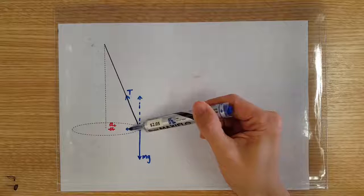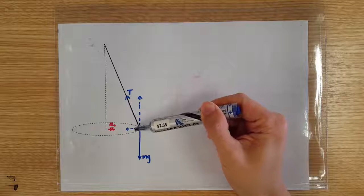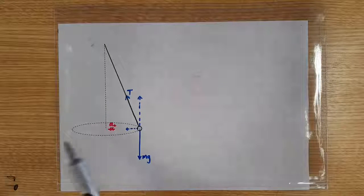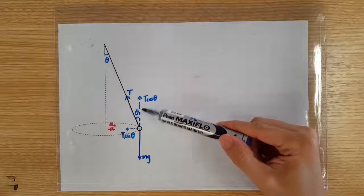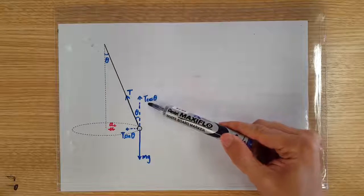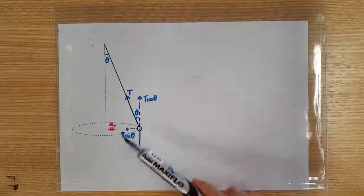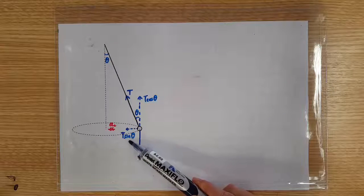In fact, it's the horizontal component of tension that provides the required centripetal force for this circular motion. If we call this angle θ, then the vertical component of tension will be T cos θ and the horizontal component will be T sin θ.